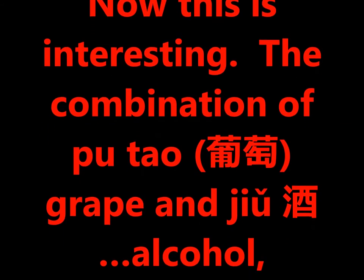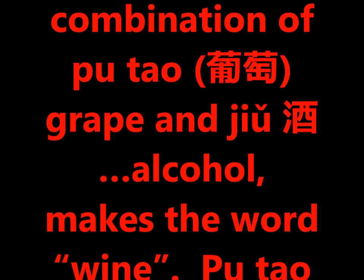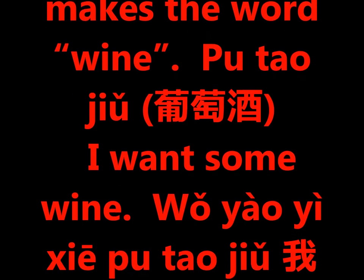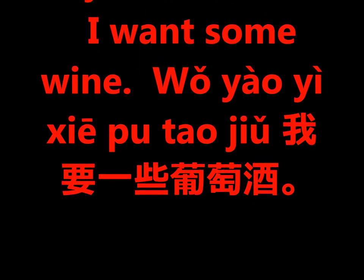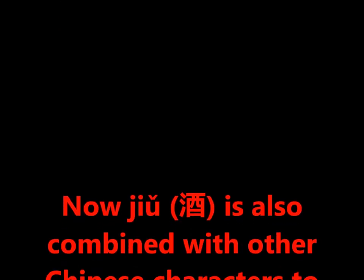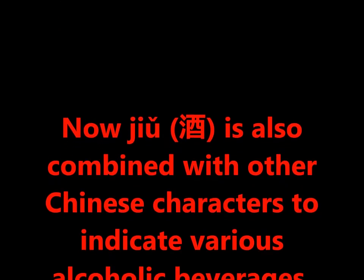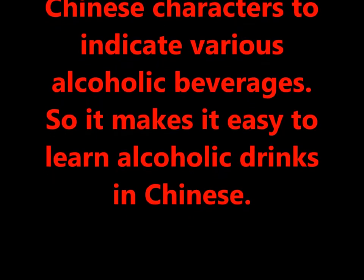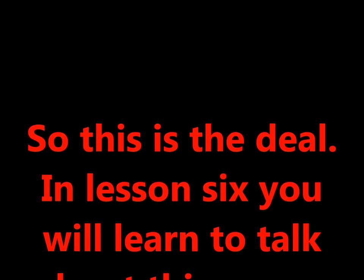This is a combination of 'grape' and 'alcohol' which makes the word for wine. The character for alcohol, 'jiu,' is also combined with other characters to indicate various alcoholic beverages, making it really easy to expand your vocabulary in this area.